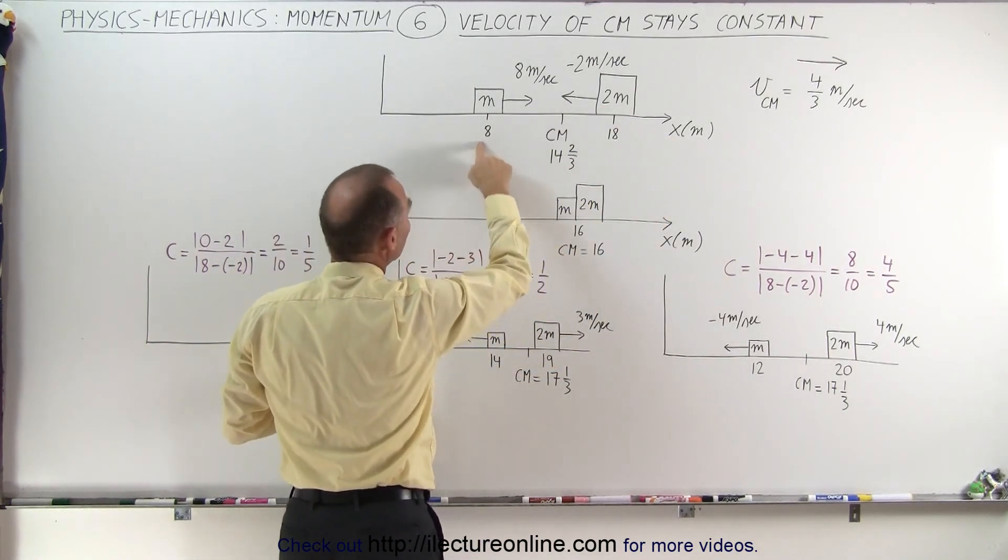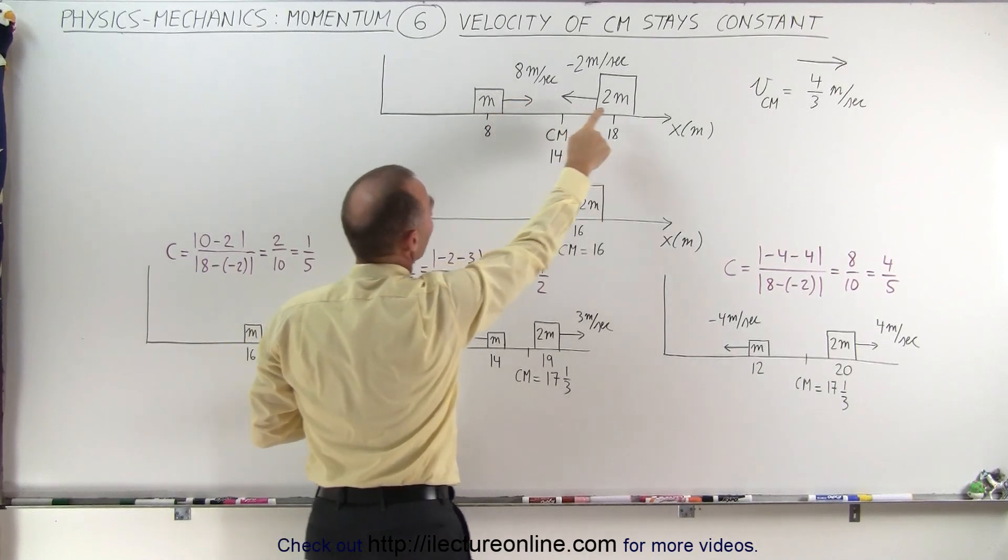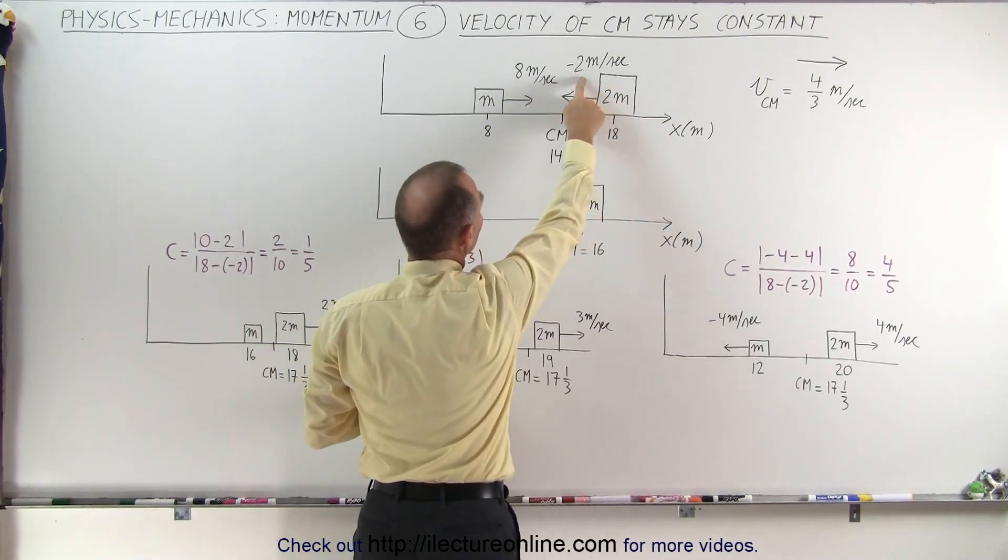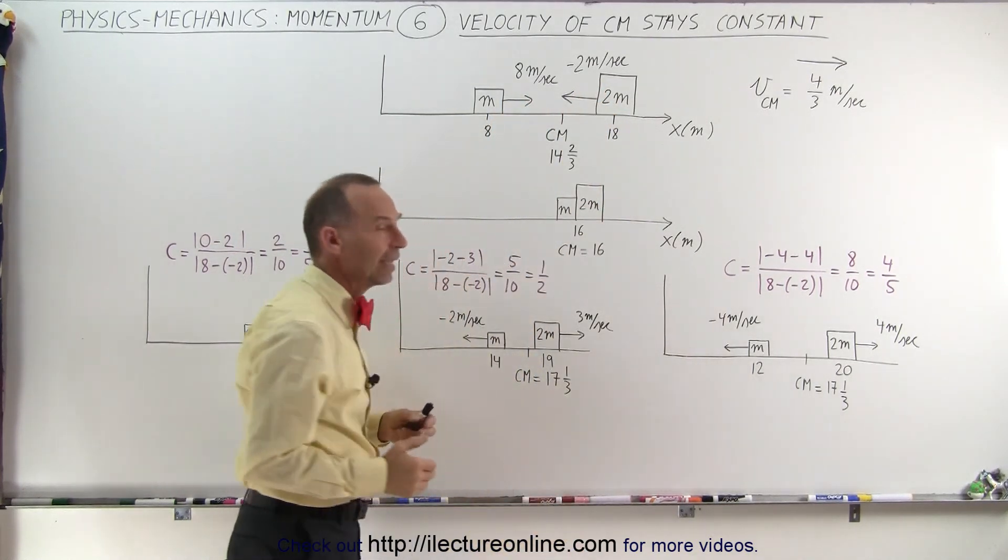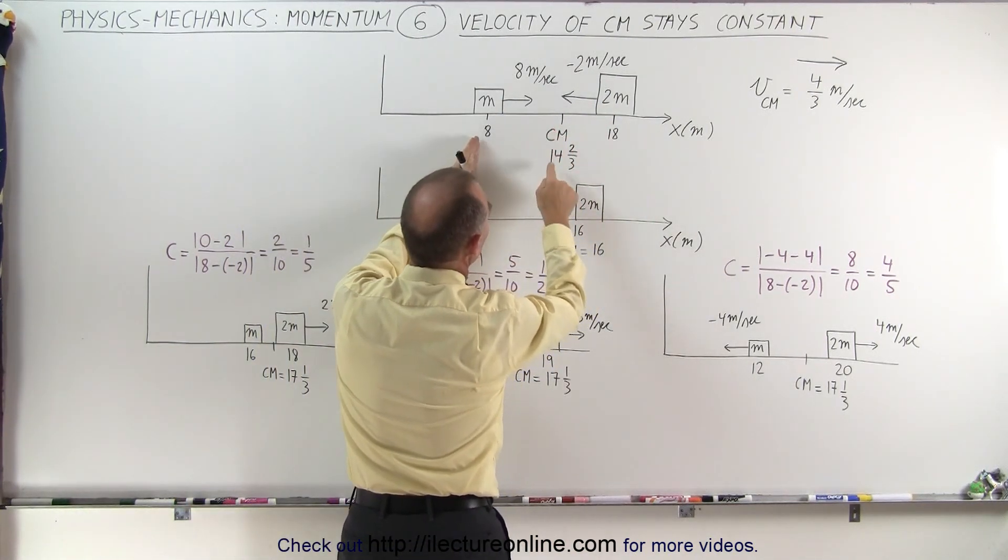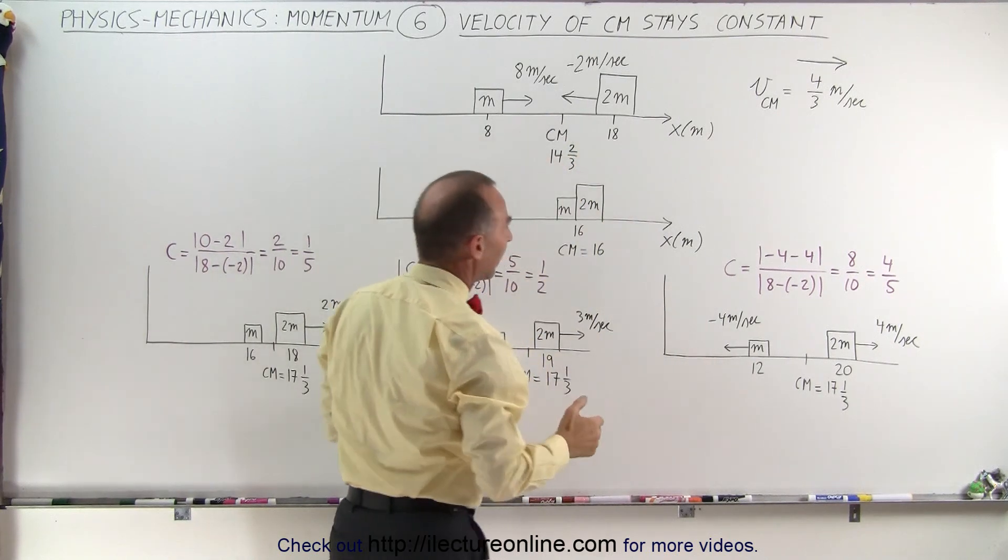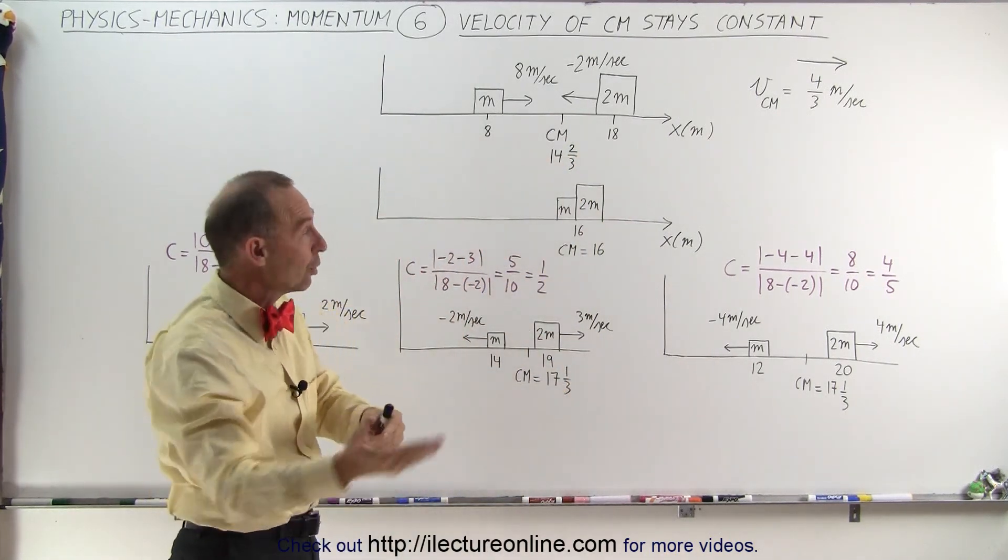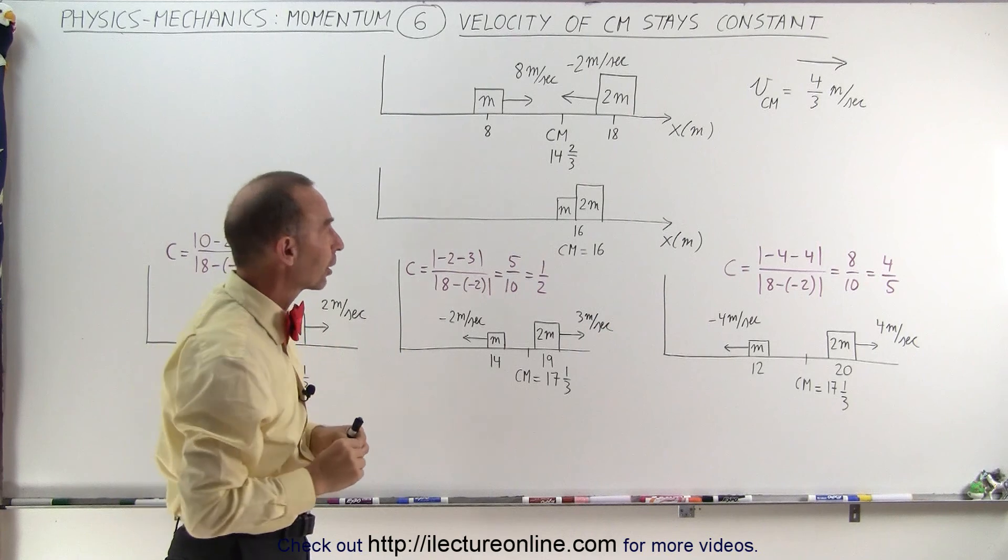The small mass moving to the right at 8 meters per second, the large mass moving to the left at minus 2 meters per second. And at this moment in time, when they're 10 meters apart, we see that the center of mass is at 14 and 2 thirds meters. If you wanted to know how to calculate that, you can go to the previous video and take a look.